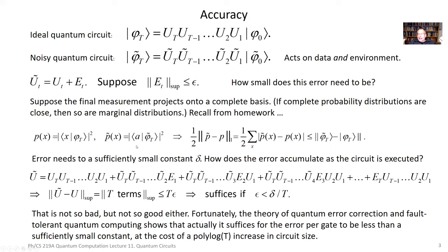Remember, in BQP we want the correct answer with probability at least two-thirds, though getting success probability one-half plus some small constant is good enough since we can amplify by running the computation a modest number of times. So if the ideal circuit gets the right answer with probability two-thirds, I'd like the noisy probability distribution to have an error less than one-sixth, so I'll still get the right answer for the answer bit with probability one-half plus some positive constant. I need this to be less than some constant like one-sixth.